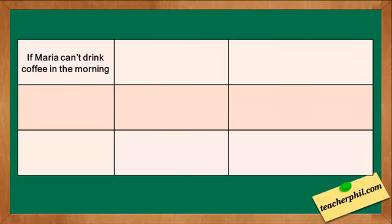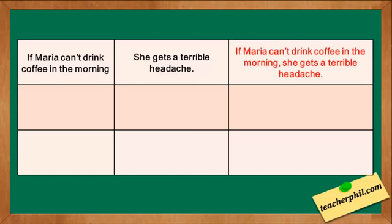The third one: if Maria can drink coffee in the morning, she gets a terrible headache. The answer is: if Maria can drink coffee in the morning, she gets a terrible headache. The IF clause and the RESULT clause are already in the present simple, so we don't need to change it.